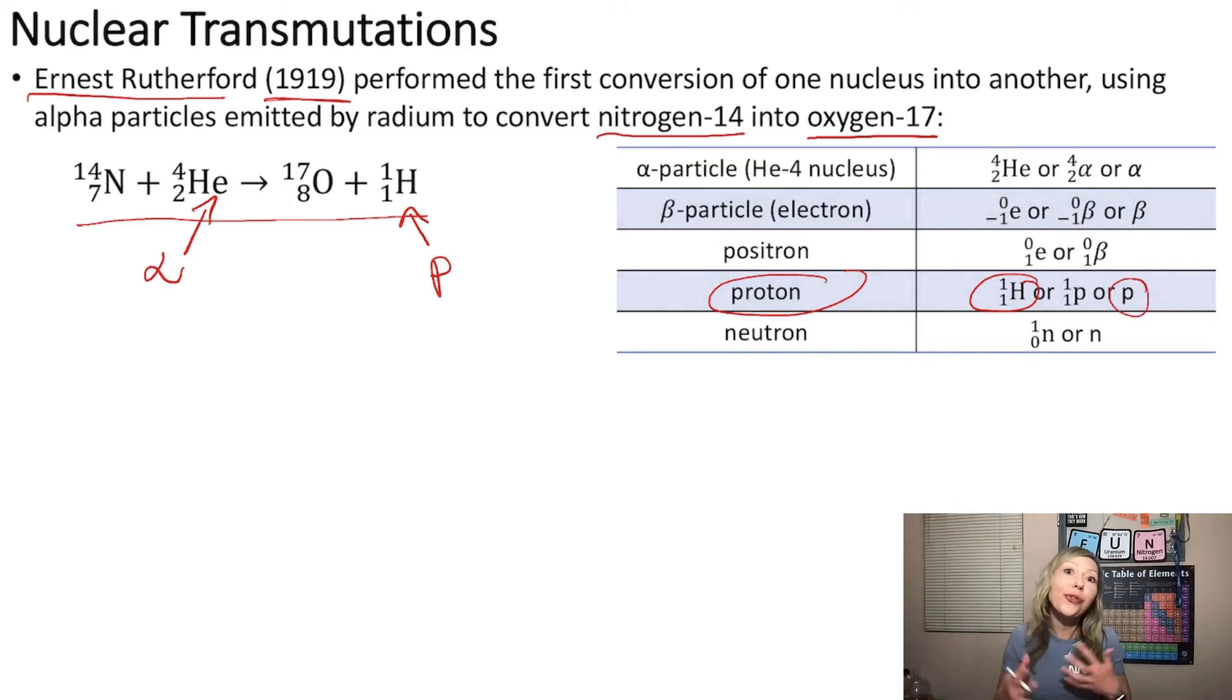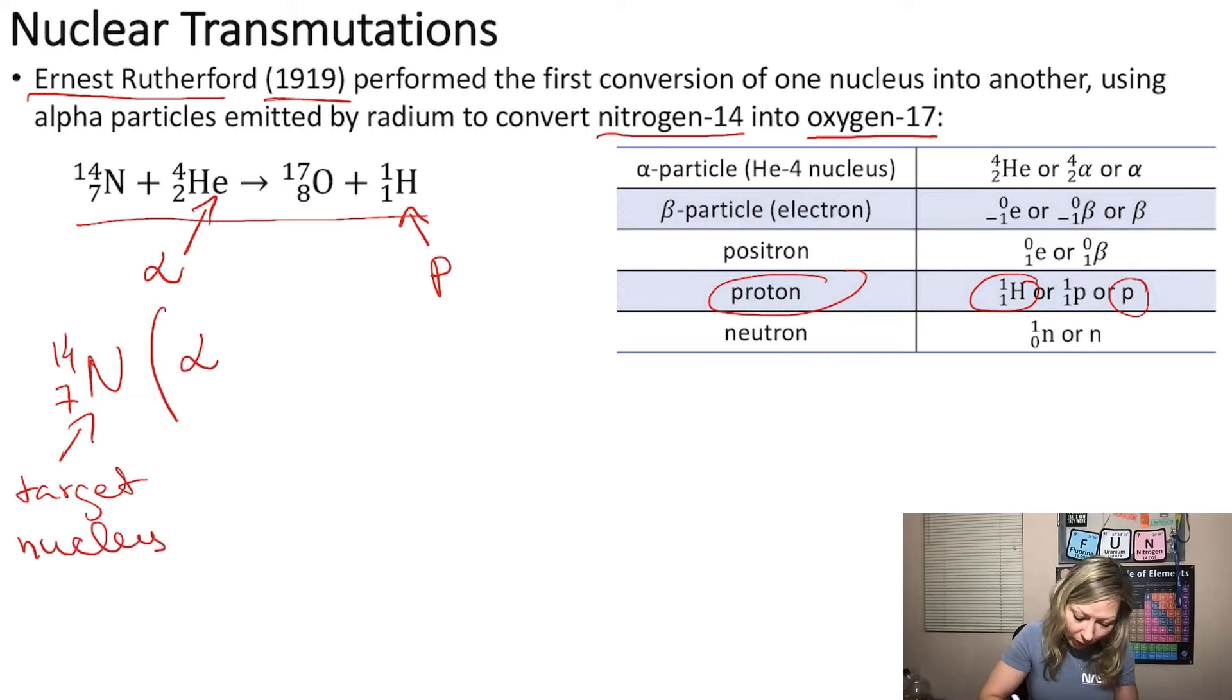So there are two different ways how we can write nuclear transmutation reactions, and there is a shorter way. So we will start with the nucleus that is the target. So the target in this case was nitrogen-14. So this is our so-called target nucleus, and then it was bombarded with alpha particles. So this is going to be called our bombarding particle.